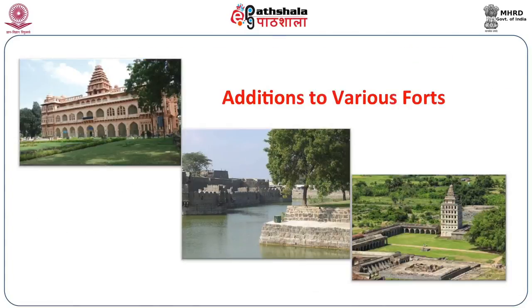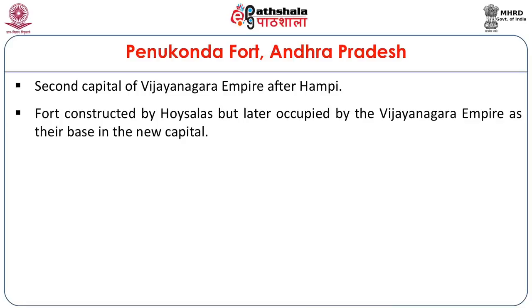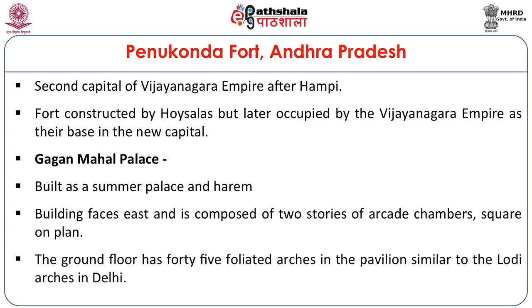Regarding the additions that Vijayanagara dynasty kings made to various forts: Penukonda Fort in Andhra Pradesh was the second capital of the Vijayanagara Empire after Hampi fell. The fort was constructed initially by the Hoysalas but was later occupied by the Vijayanagara Empire. Within the fort, the kings built the Gagan Mahal Palace as the Summer Palace and Harab for the queens and courtesans. The building faces east and is composed of two stories of arcade chambers, square on plan. The ground floor has 45 foliated arches in the pavilion, similar to the Lodi arches in Delhi, showing a distinct Islamic influence — just like the Lotus Mahal in Hampi.